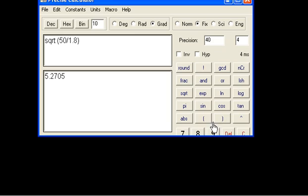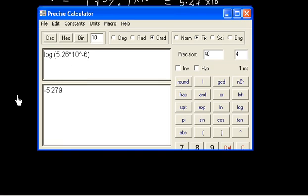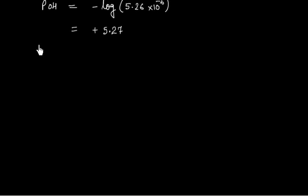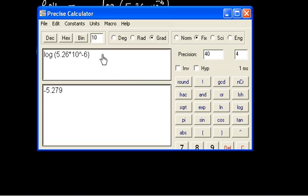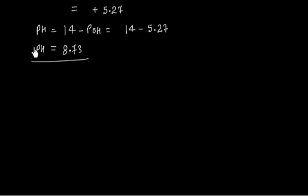From pOH we calculate pH: pH = 14 − pOH = 14 − 5.27 = 8.73. So at the equivalence point, pH = 8.73, which is greater than 7, confirming the solution is basic.